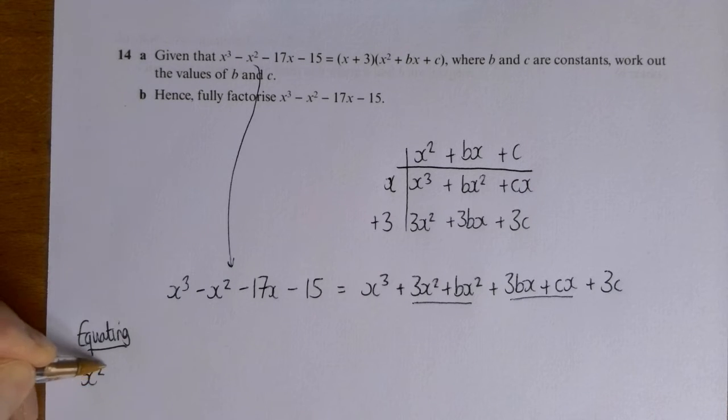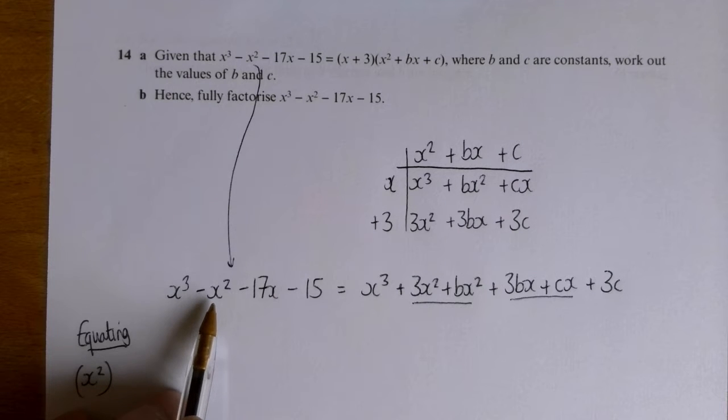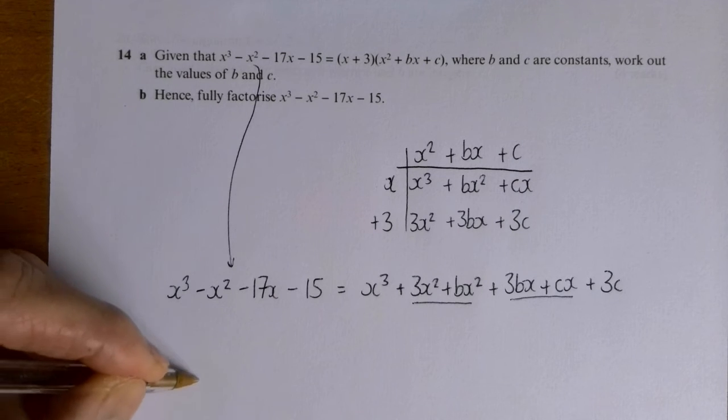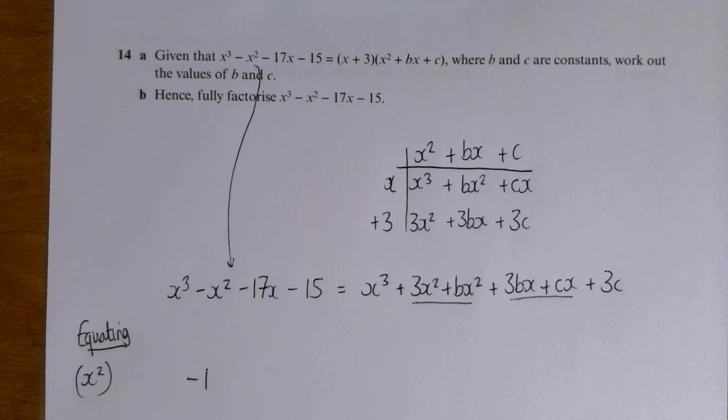But let's look at the x squared. And just so it's clear what I'm doing, I'm going to put in brackets that I'm now looking at the x squared. On the left hand side, I've got minus one x squared. So I'm just writing the number I've got. I'm not writing minus one x squared. I'm just saying I've got minus one of them over here. On this side, how many x squareds have I got?